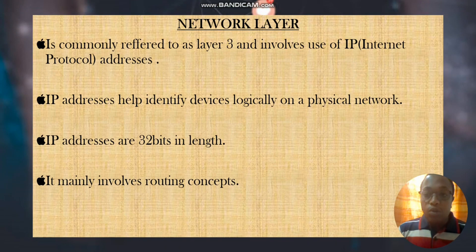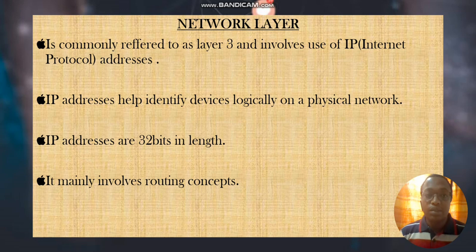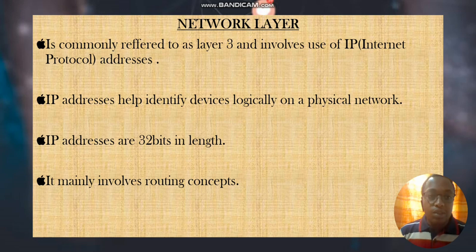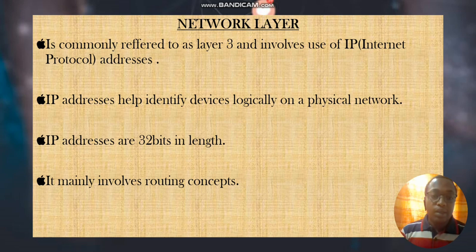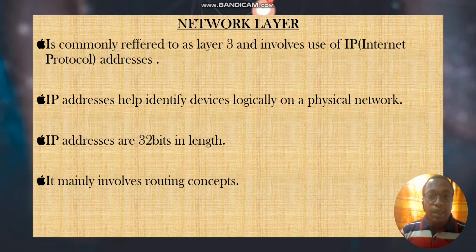The third layer is the Network layer, commonly referred to as Layer 3. It uses IP addresses for identification. Remember, in Layer 2 we talked about MAC addresses; now in Layer 3 we talk about IP addresses. IP addresses help us identify devices logically on a physical network and are 32 bits in length. Mainly in the Network layer, we talk about routing concepts.